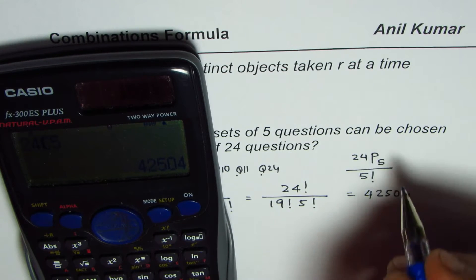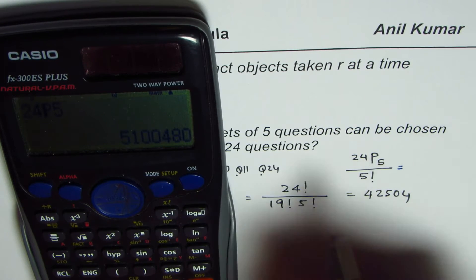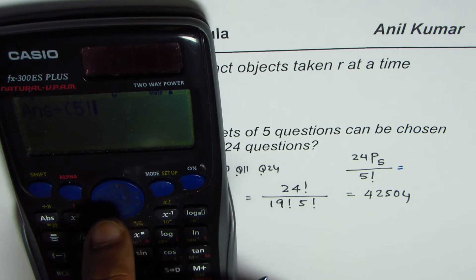Now let us check this answer from the permutation point of view. We have 24 permutation 5, which is a big number. We'll divide this number by 5 factorial.